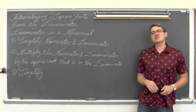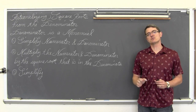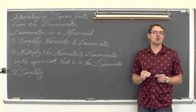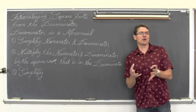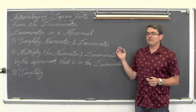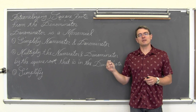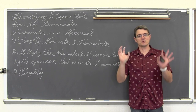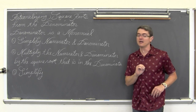In this video we are going to talk about rationalizing the square roots from denominators when the denominator of your fraction is a monomial — a collection of just numbers and variables that are being multiplied together. In a following video we are going to rationalize the denominator when it is a binomial, which is when you have two terms separated by an addition or subtraction sign.